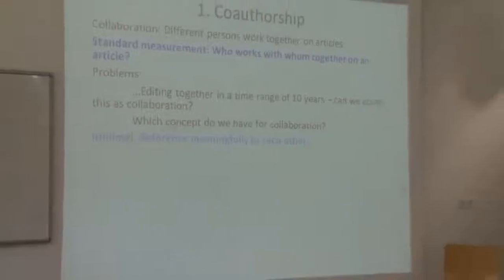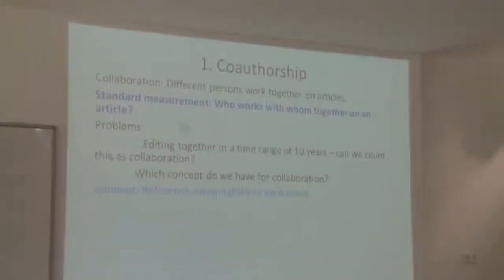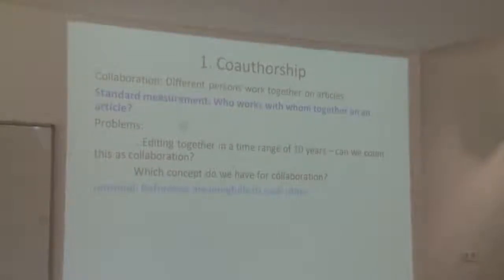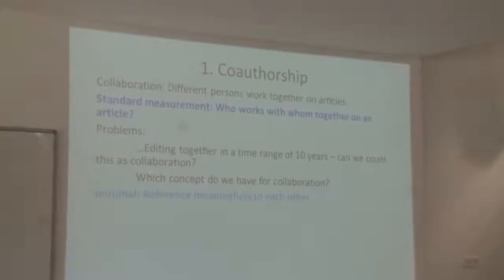The background ideas — we refer to four concepts. The first is co-authorship, the second is the overlapping time-window based analysis, the third is the sociological concept of positions, and the fourth is the center-periphery structure. Regarding co-authorship: we know collaboration involves different persons working together on articles. The standard measurement in computer science is simply who works with whom together on an article. But the problem is Wikipedia is now 11 years old — can editing together over a range of 10 or 11 years count as collaboration?